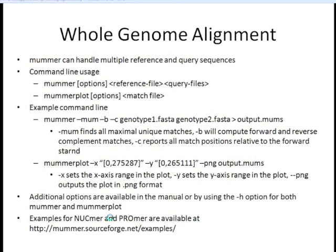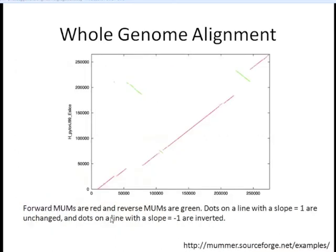Now let's look at what MUMmer and MUMmer plot gives us. This is what the plot looks like. For all of the forward MUMs they're going to be red, and the reverse MUMs are going to be green. Any dot on a line with a slope of 1 represents unchanged regions, and ones with a slope of negative 1 are inversions. This allows you to see where you have synteny across the chromosome between two different genomes.